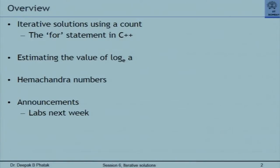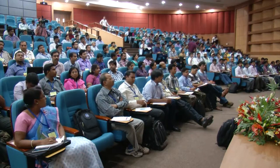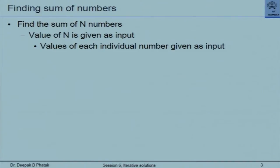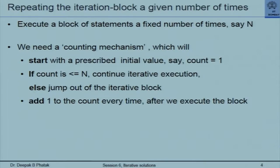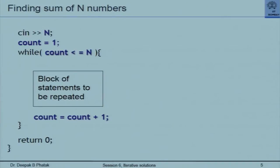Iterative solutions using a count — explaining the for statement in C++, then using the loop for estimating the value of the logarithm. Then we discussed the Hemchandra numbers, now called Virahanka numbers. How many of you have heard of these Hemchandra or Virahanka numbers? None. That is the problem. There is an Indian legacy which, through Arab scholars, reached Europe and they are now known after a European scientist's name — same numbers.